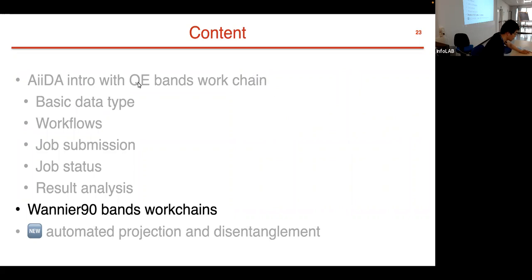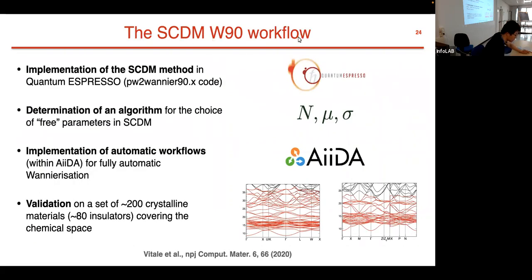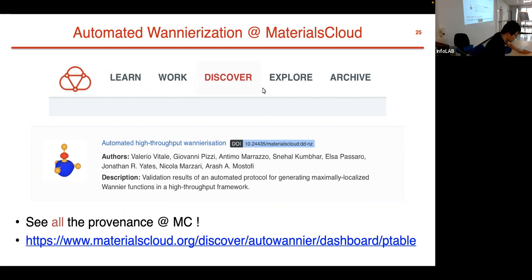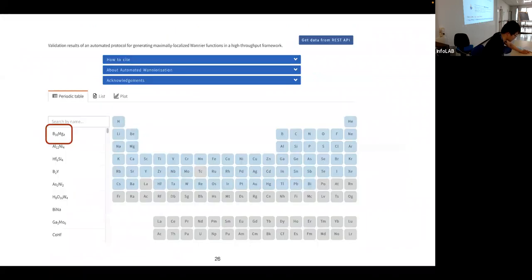In the tutorial, we'll launch a Quantum ESPRESSO band structure and a Wannier90 band structure. The Wannier90 workflow implements the SCDM algorithm, implemented in the pw2wannier90 code, using projectability to determine the SCDM parameters μ (mu) and σ (sigma). The workflow is implemented within AiiDA. In the Valerio et al. paper, it was validated on 200 crystalline materials and 81 insulators to evaluate interpolation quality, with good results. On Materials Cloud you can find the full provenance of all calculations in the automated high-throughput Wannier90-ization entry.